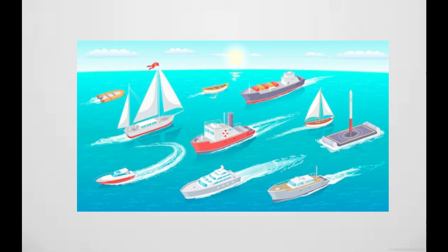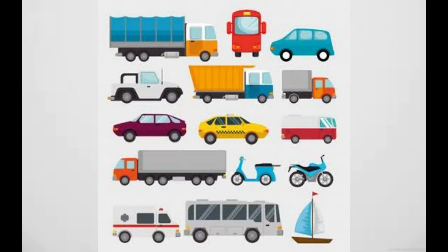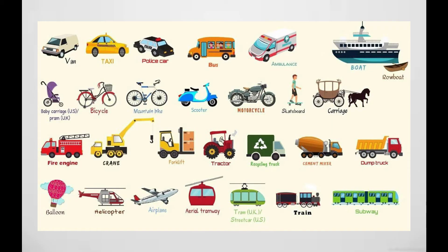rivers. Cars, aeroplanes, scooters, and trains are some means of transport. Trains, cars, buses, and cycles are some vehicles that move on land. Ships and boats are examples of vehicles that move on water. Aeroplanes and helicopters are vehicles that move in air. Now we understand the three types of transport.